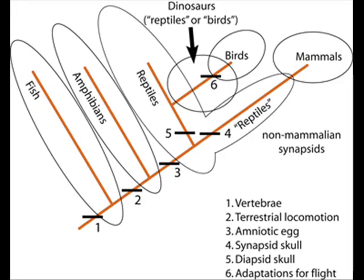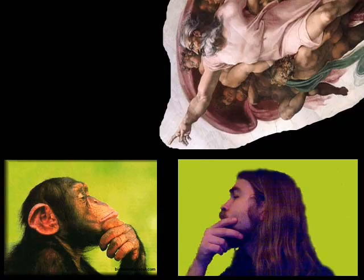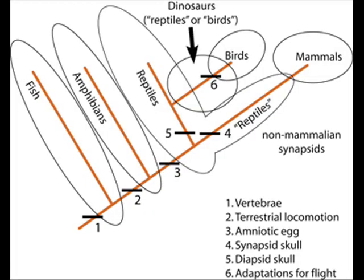A common young earth creationist response to this is that the similarity of genes corresponds with the similarity of organisms themselves. Despite not accounting for the pattern of a nested hierarchy, this would be a good argument, except that all genes follow the same pattern, despite some being nonfunctional.